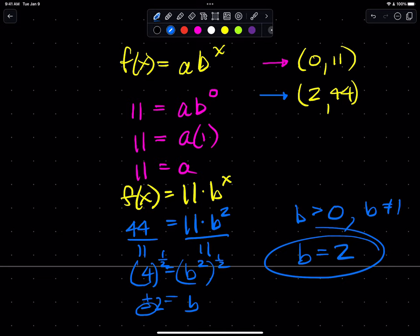And I don't remember—do they say that it's an exponential? Yes. So in the directions they say an exponential function. Technically, if they didn't say that, the negative 2 would be a viable answer.